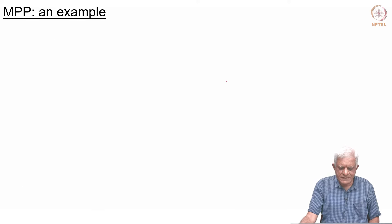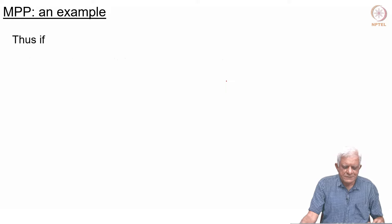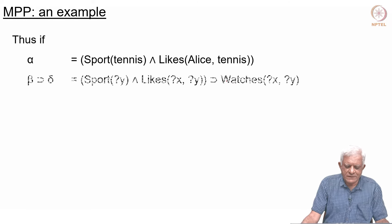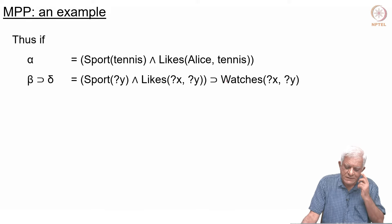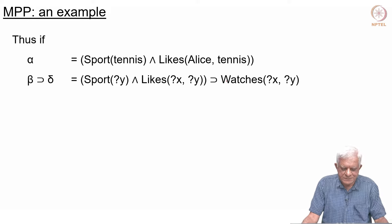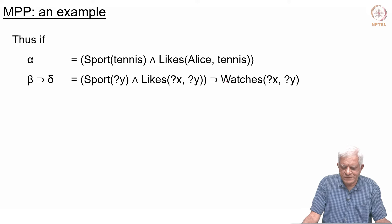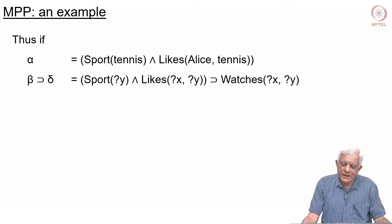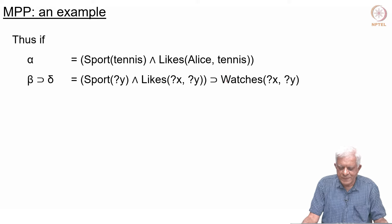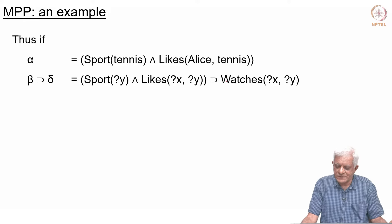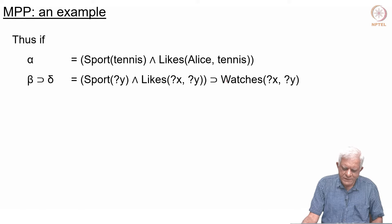Let us look at an example of that. Here is a formula alpha which says that tennis is a sport and Alice likes tennis. Then we have a rule which says that if something — which we are calling y — if y is a sport and if x likes y, then x watches y. From this we want to infer that Alice watches tennis, which seems sound enough.